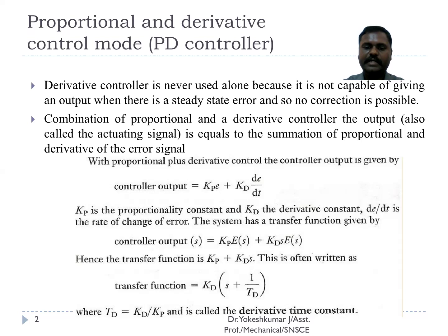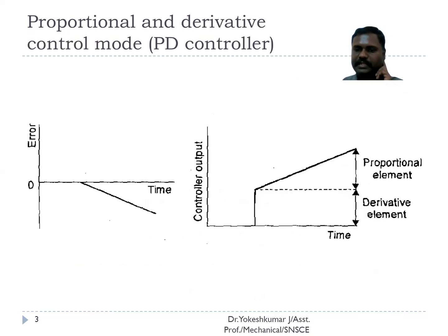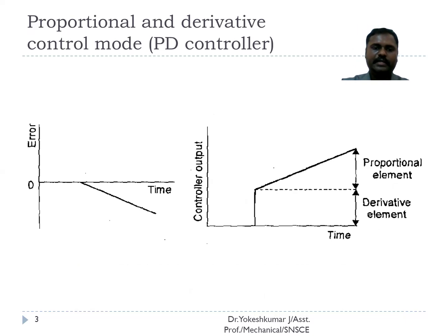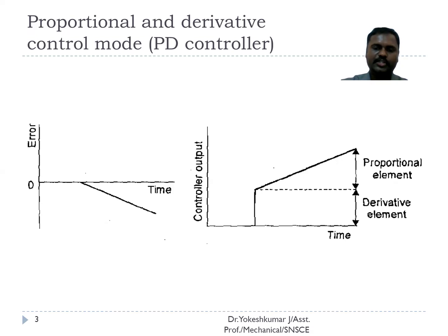This mathematical equation describes the controller behavior. The illustration explains the controller output with respect to the error signal. Looking at the left-hand side graph, initially we have no error signal and the controller also produces no output. For a particular time period, when an error signal is produced in the system and the controller receives it, immediately the derivative mode comes into action, which produces a large output equal to the error signal.